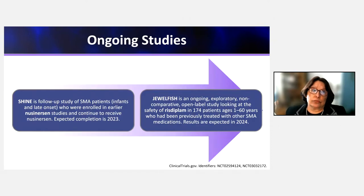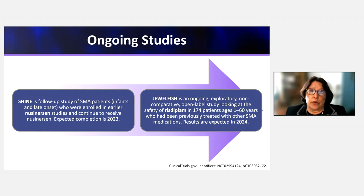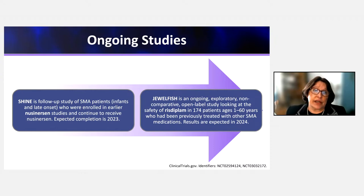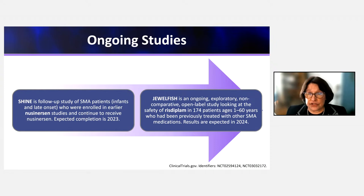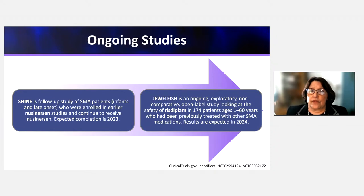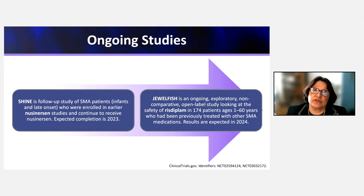Regarding ongoing studies: patients from nusinersen phase 1/2 and pivotal trials were enrolled in SHINE, a long-term open-label extension study that has been running for over 10 years for some patients and is now concluding in 2023. JEWELFISH is an ongoing exploratory comparative open-label study for patients previously treated with SMA-specific medication prior to enrolling in a risdiplam study — it is primarily a safety and tolerability study with some outcome measures included, and is expected to report in 2024.